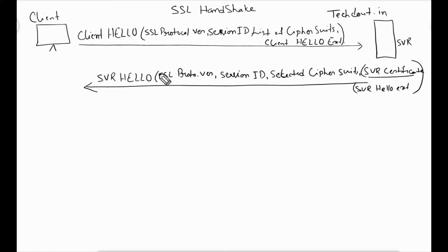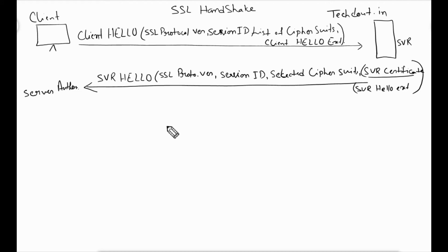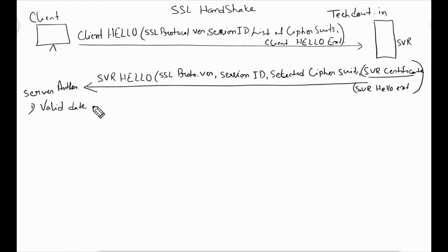On receiving the Server Hello, the client performs server authentication. The client evaluates the certificate and verifies certain information. The first thing it verifies is the validity date — there is a date in the certificate indicating whether the certificate is currently valid and active.